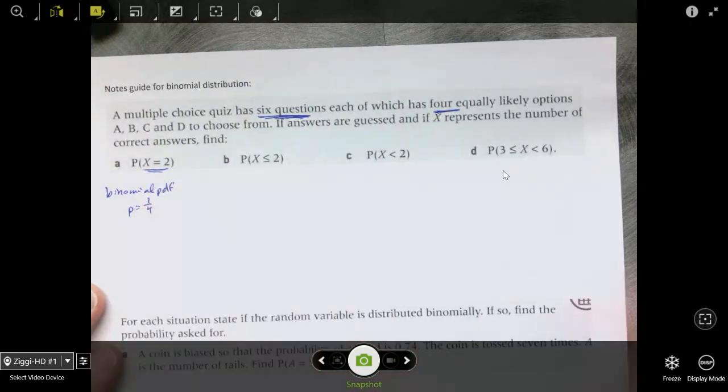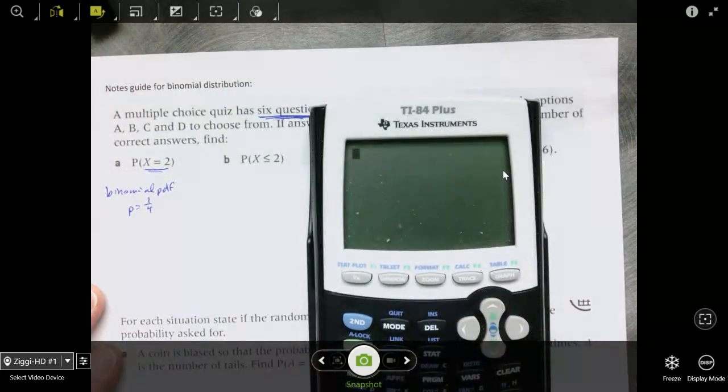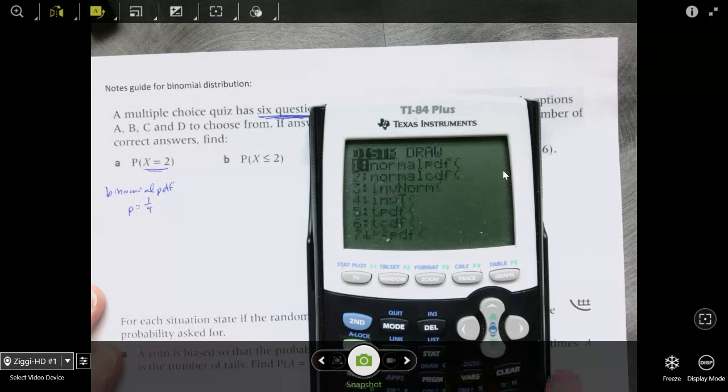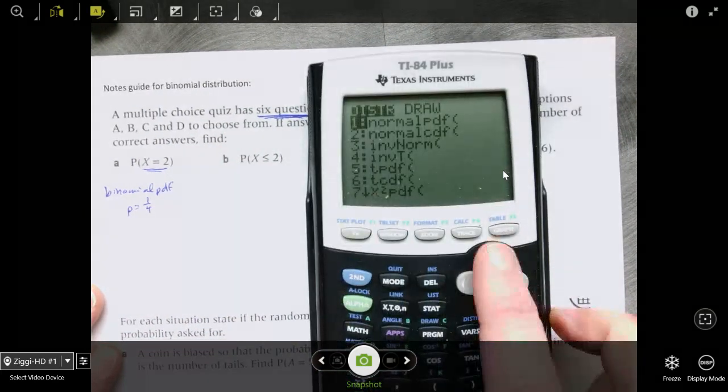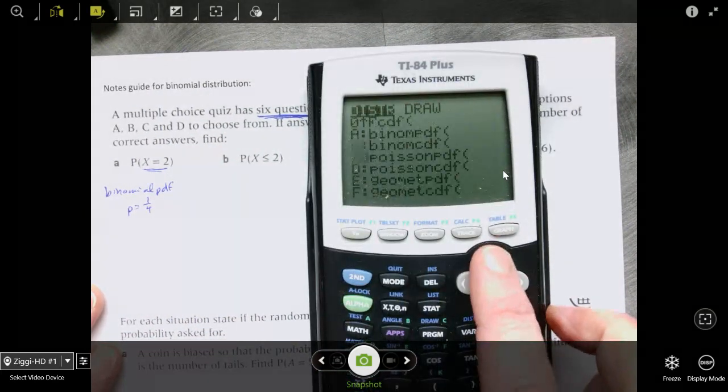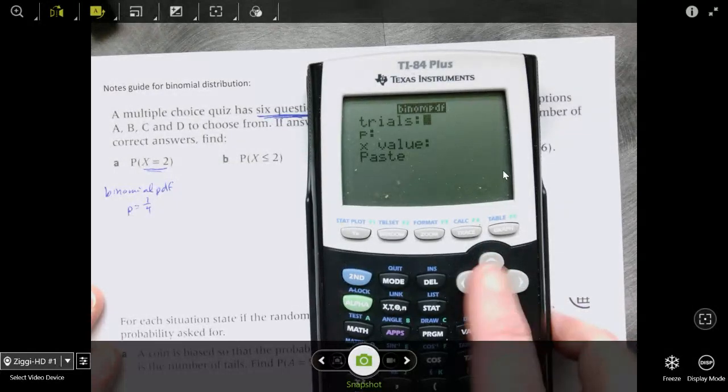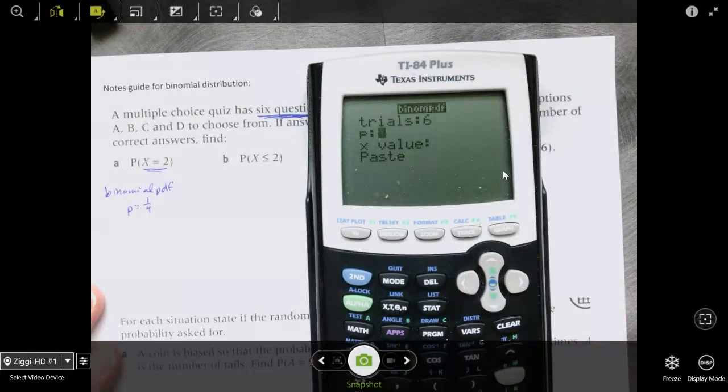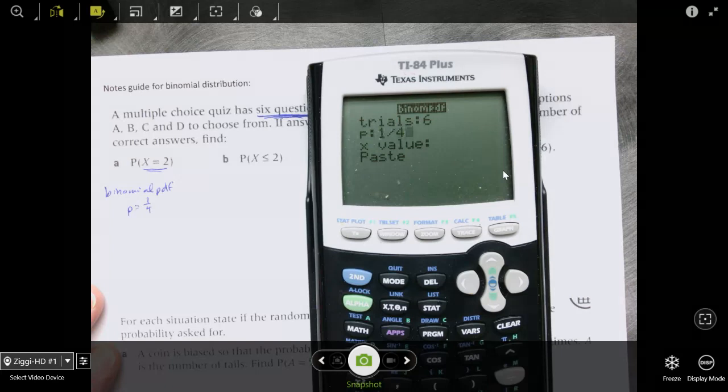Okay, and so the probability is 1 fourth that you're going to get it right. And we want to know the probability that you get exactly 2 right. And so we go to distributions and go to binomial PDF. And there are 6 trials, 6 questions. The probability is 1 fourth. And we want to know if you get 2 right.